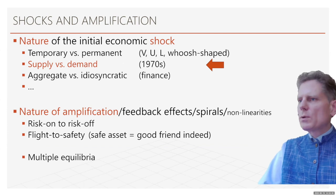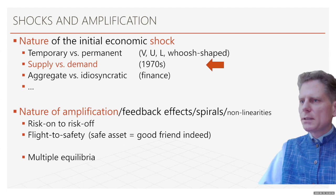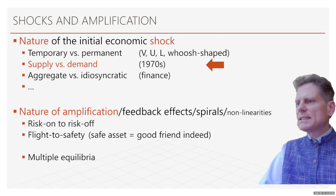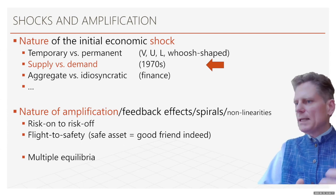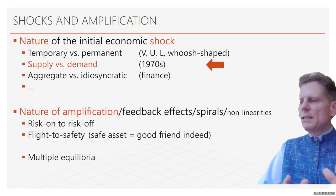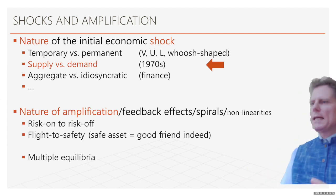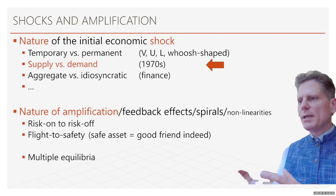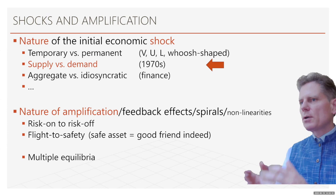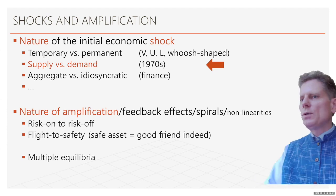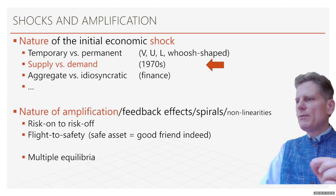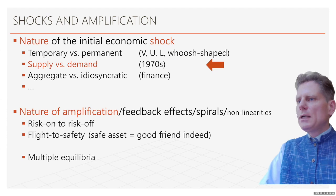Before we begin, I'd like to look back at the classification of shocks. We said there are initial shocks and then amplification through feedback loops, spirals, and other non-linearities kicking in — risk-on/risk-off phenomena and flight to safety amplifying things further. Today the focus is on the classification of the initial shock. One dimension is time: is it a temporary or permanent shock? A V-type, U-type, or L-type? Or, as Paul Krugman pointed out, a 'swoosh'-shaped shock like a Nike swoosh where we come back to the old path. Today we focus very much on supply versus demand. The 1970s showed how important it is to distinguish between the two, also with regard to inflation.